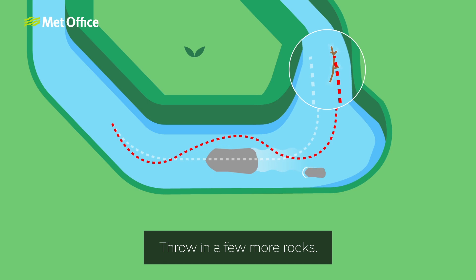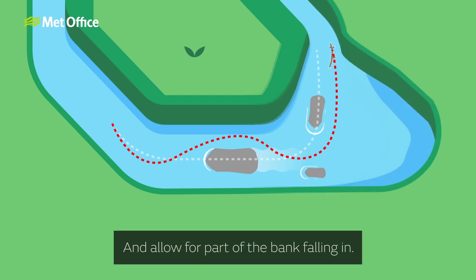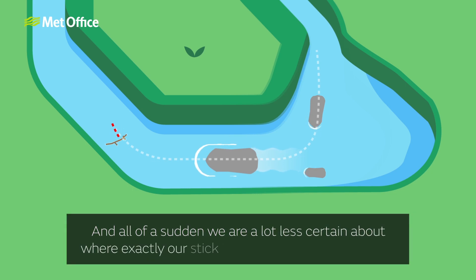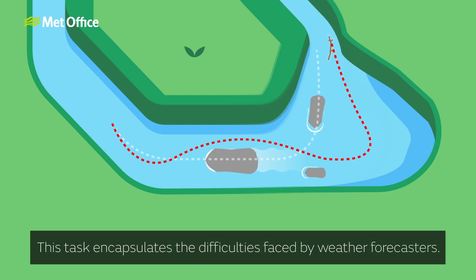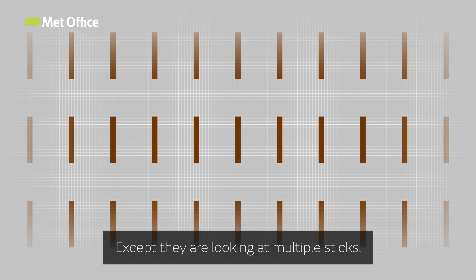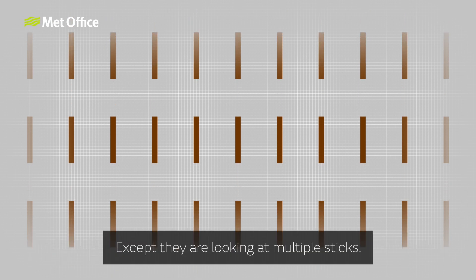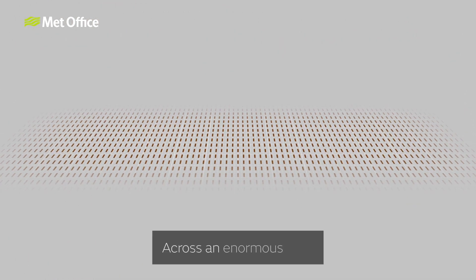Throw in a few more rocks, and allow for part of the bank falling in. All of a sudden we are a lot less certain about where exactly our stick is likely to be at any one time. This task encapsulates the difficulties faced by weather forecasters, except they are looking at multiple sticks in three dimensions across an enormous area.